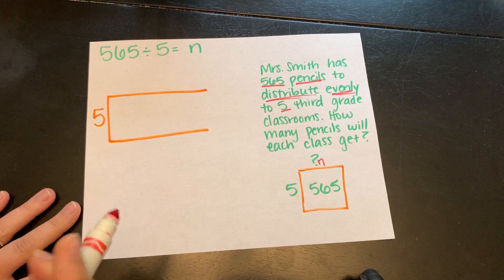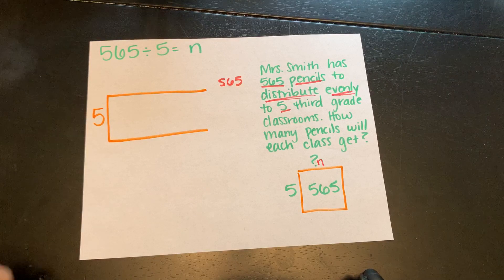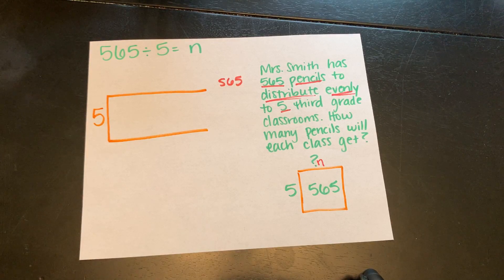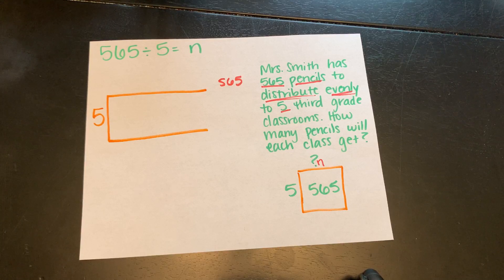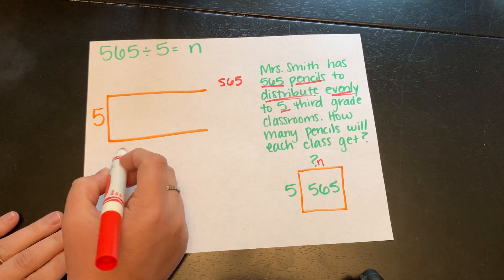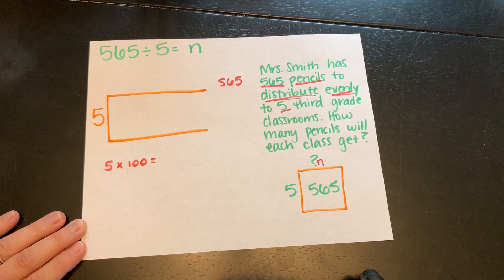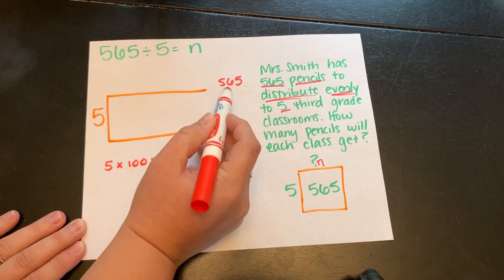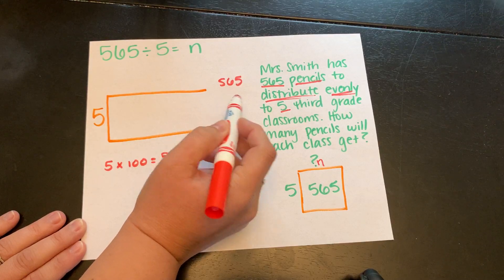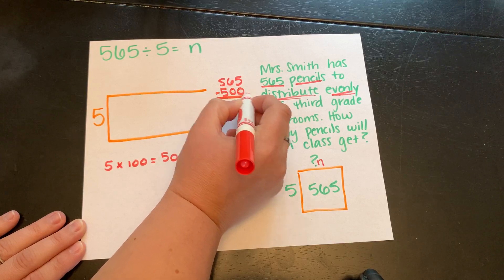I want to think friendly numbers. We know that we're starting with 565. That is our beginning number, the total amount that we have that we're trying to distribute evenly into five groups. Think of things like hundreds and tens. Those powers of tens are friendly numbers and easy to work with. 5 times 100, what is 5 times 100? 5 times 100 is 500. Can I get a group of 500 out of 565? I sure can. So let's go ahead. I'm going to take that away.